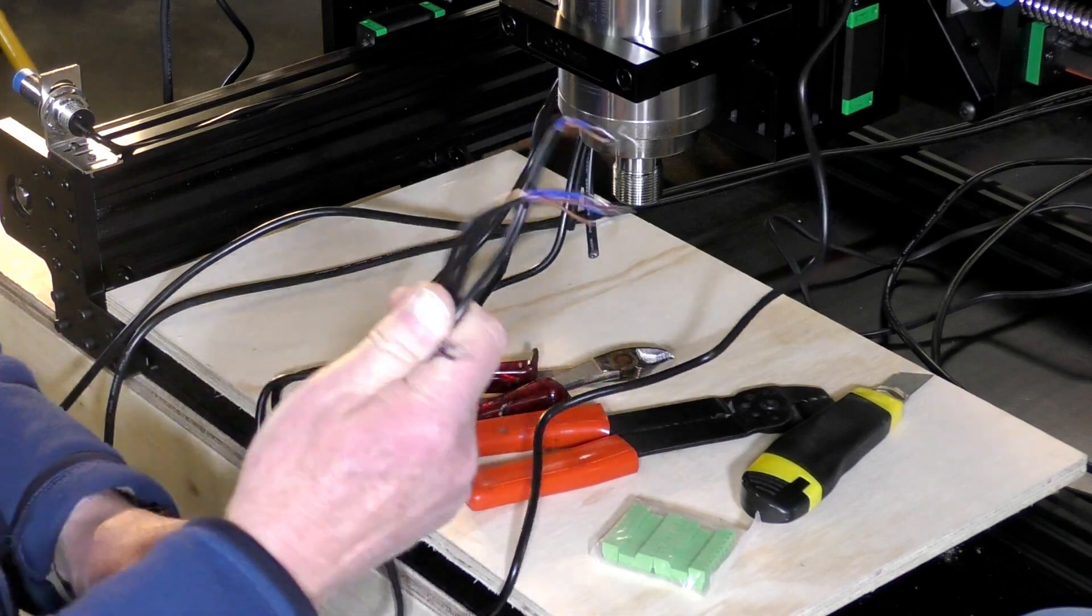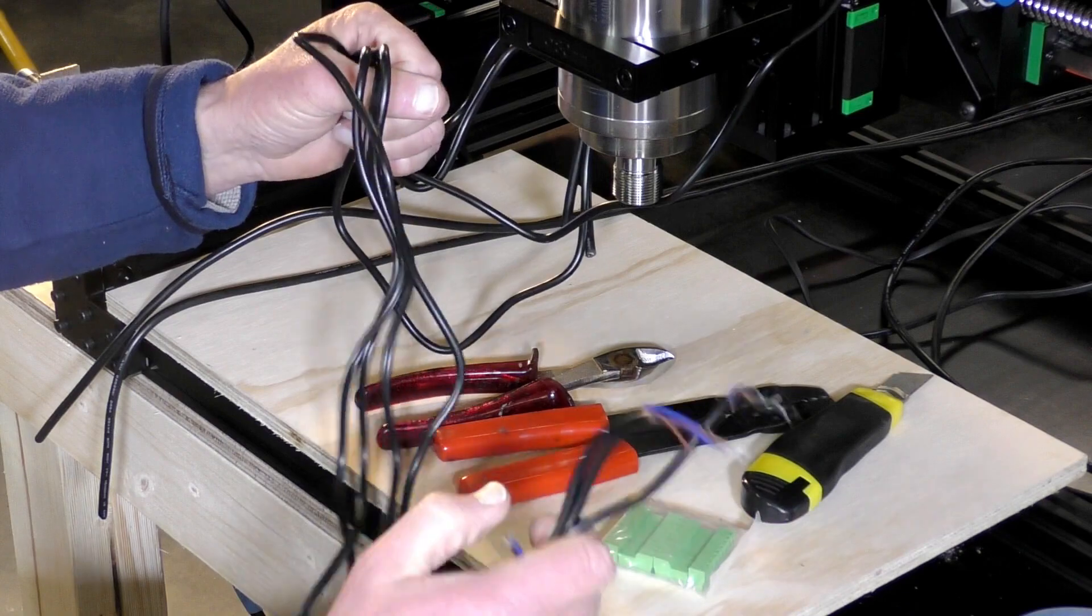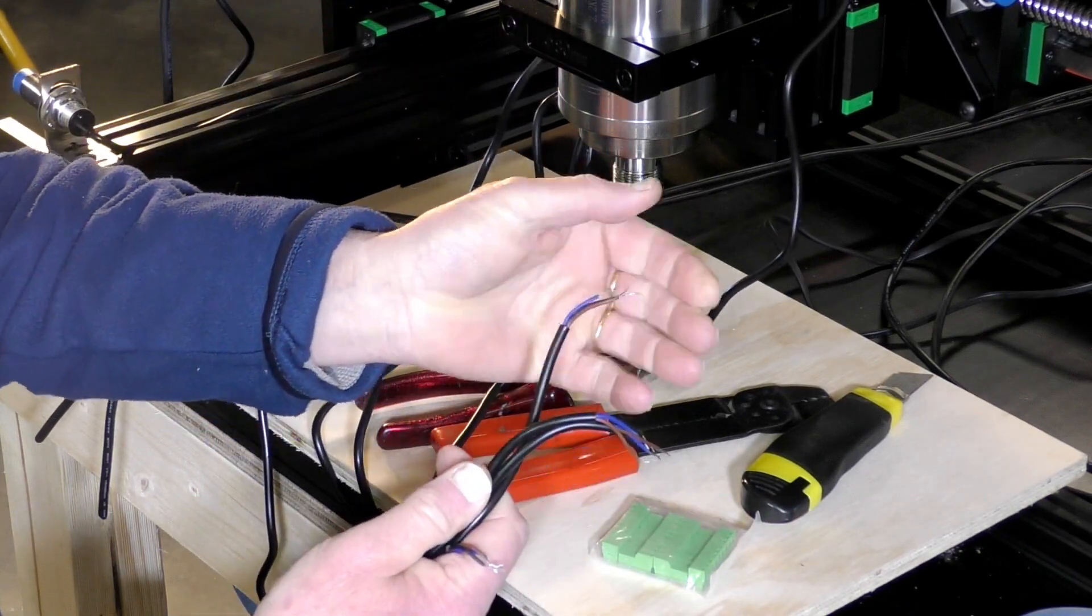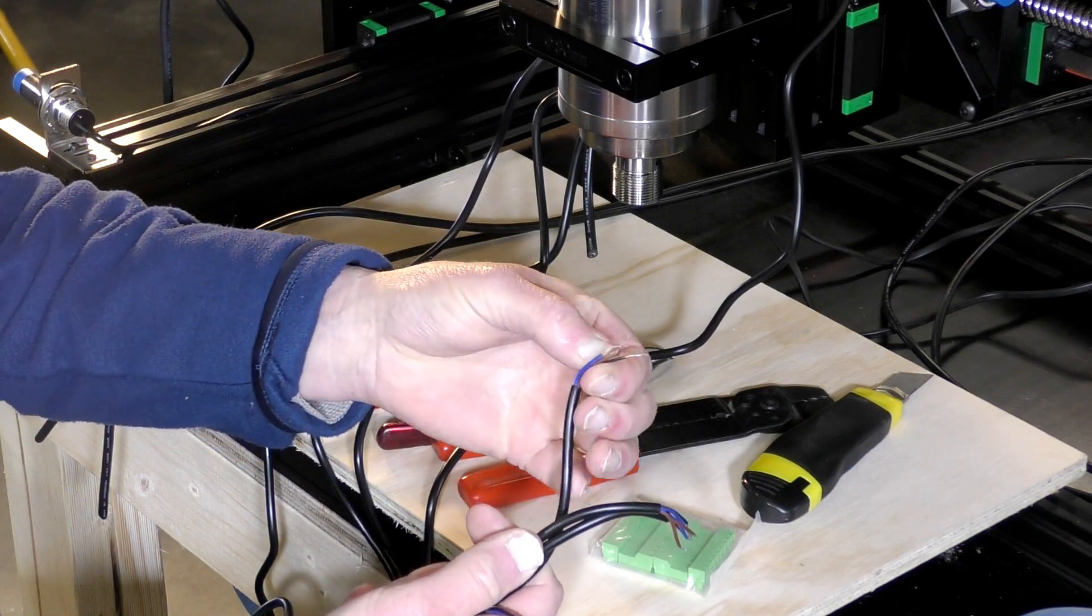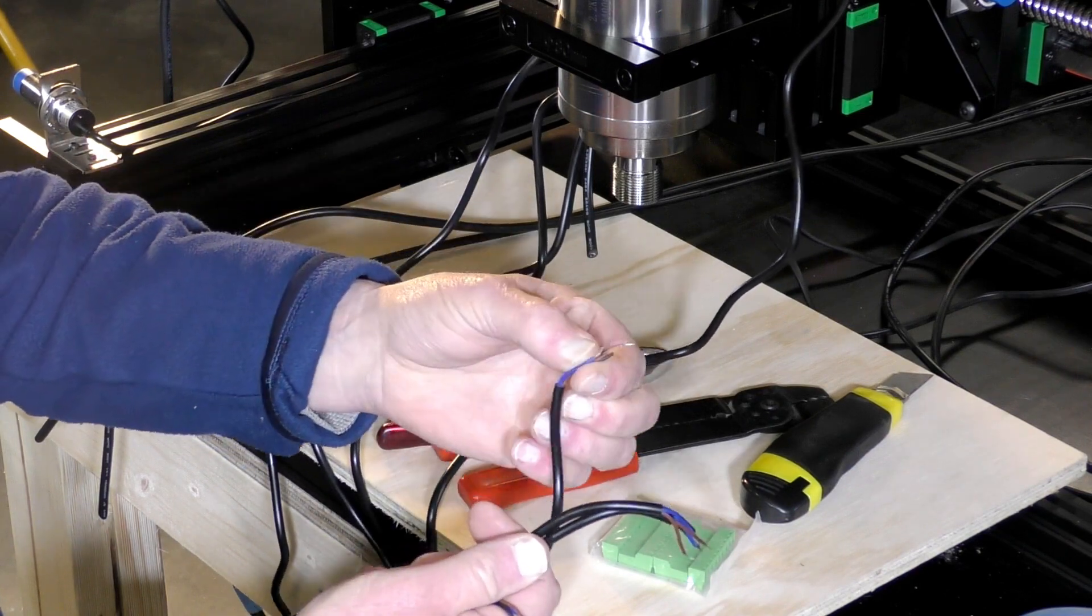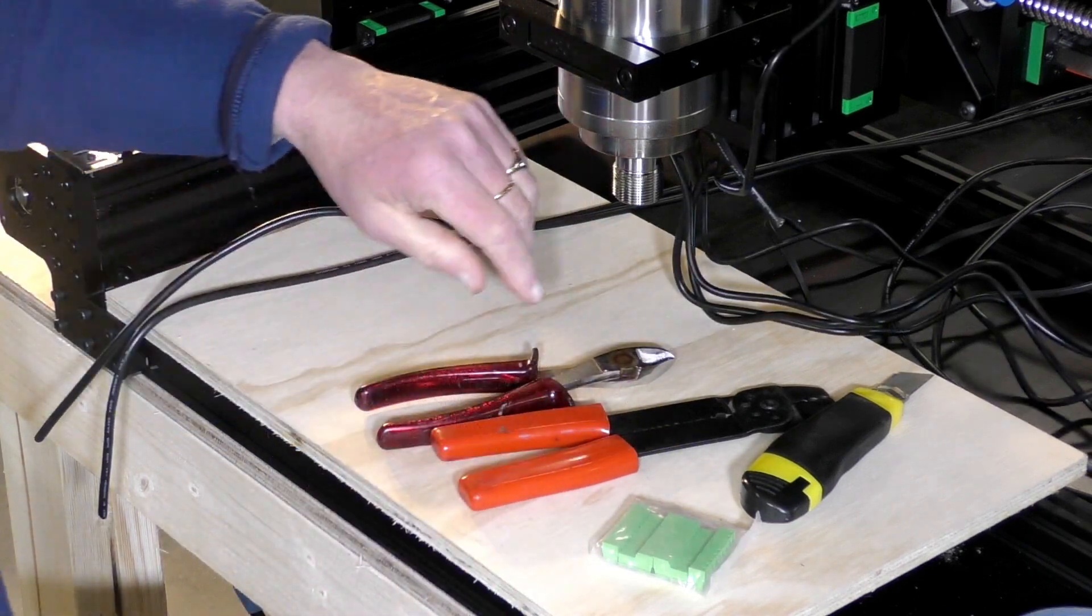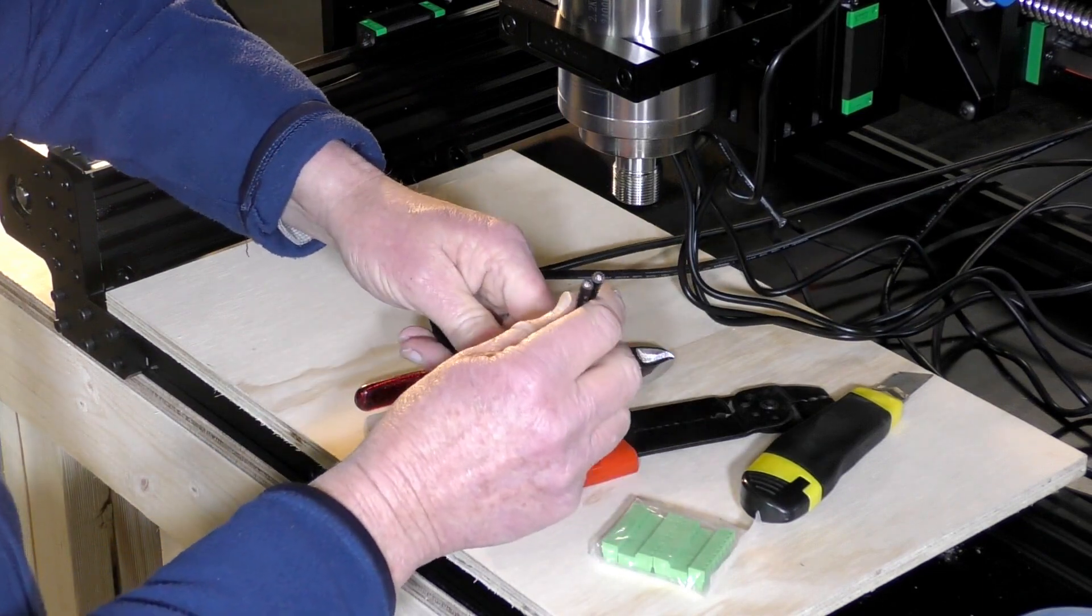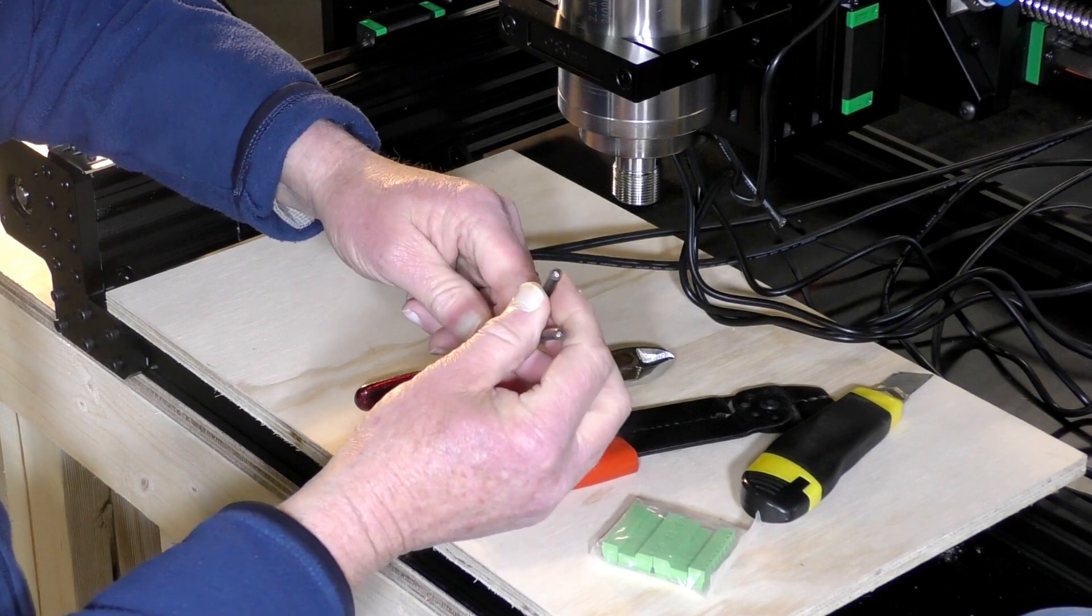So these are the X and Z proximity sensors cables, of which there are three wires in each. There's brown, blue and black. So there's a positive, negative and a signal. Yu Yong has supplied many meters of 3-core shielded cable.